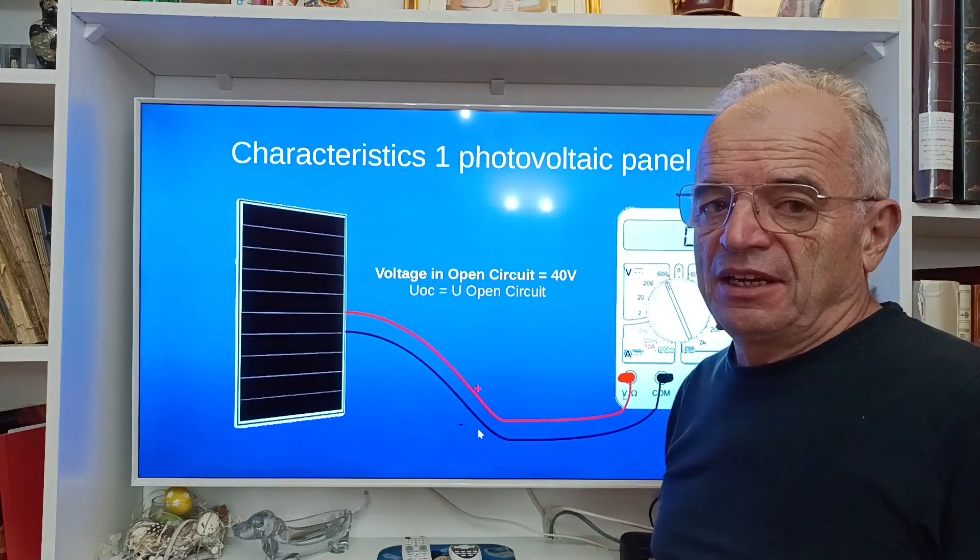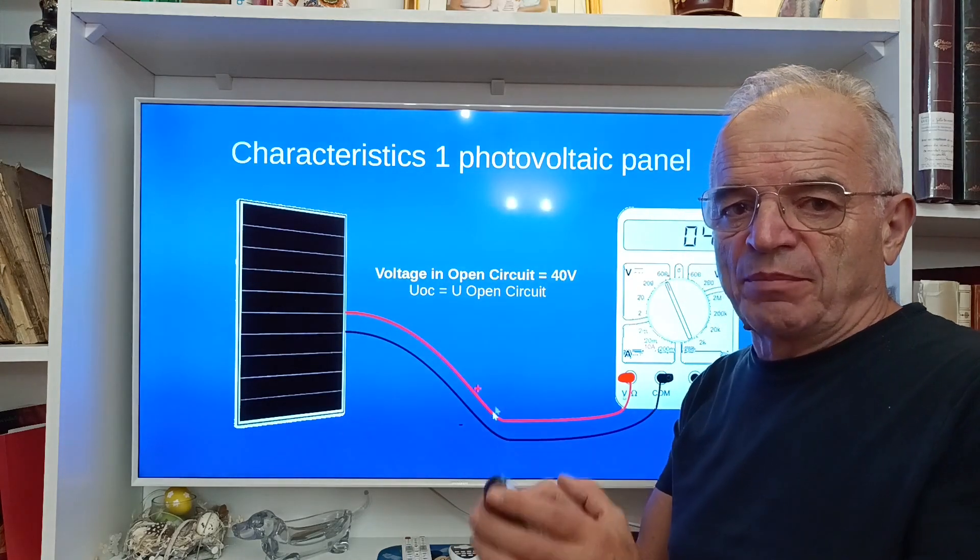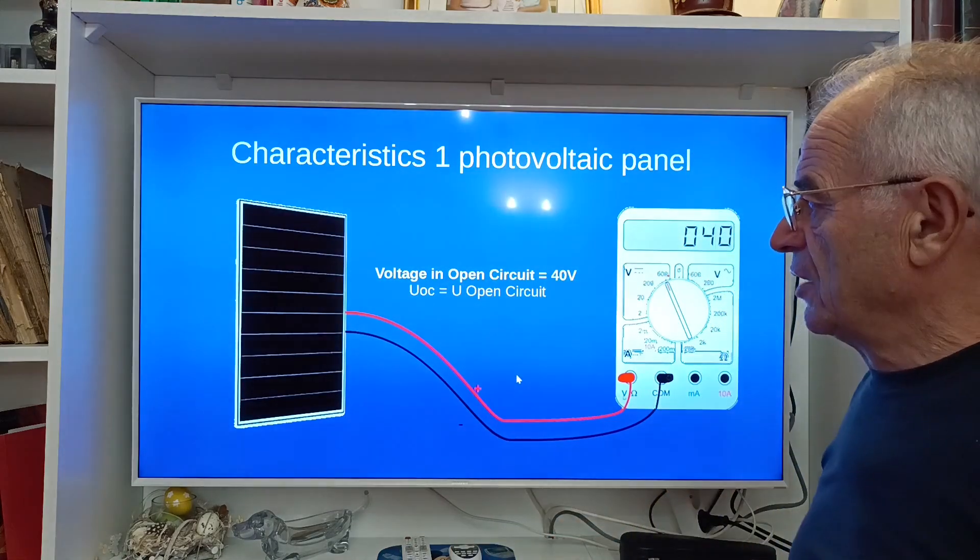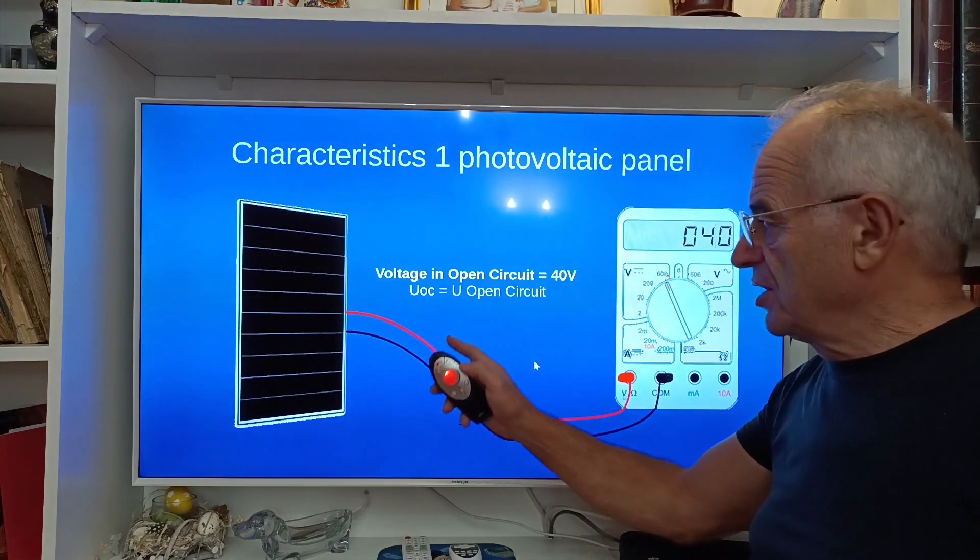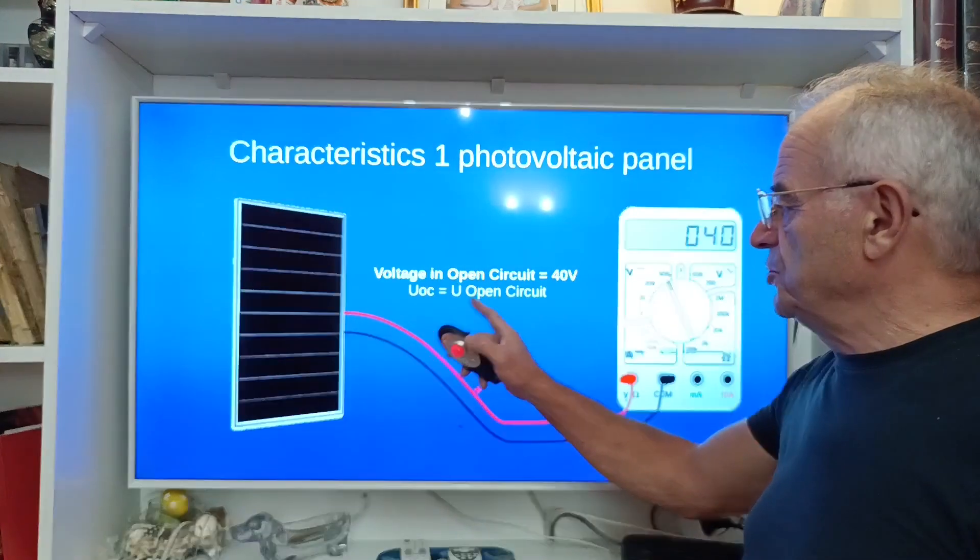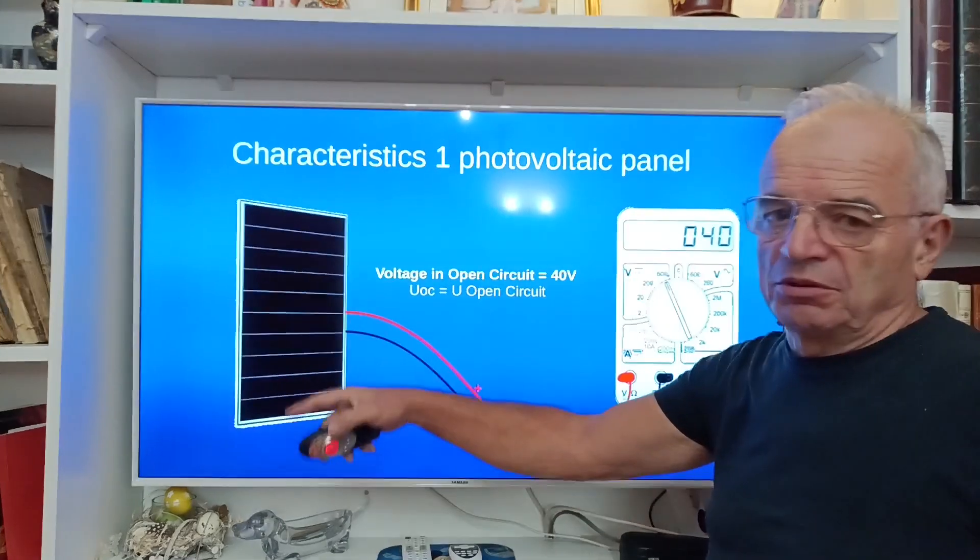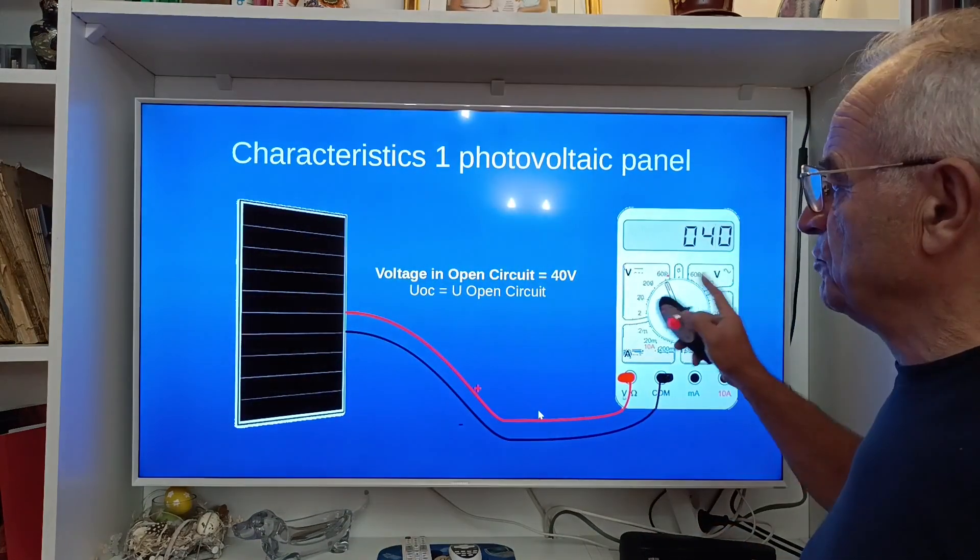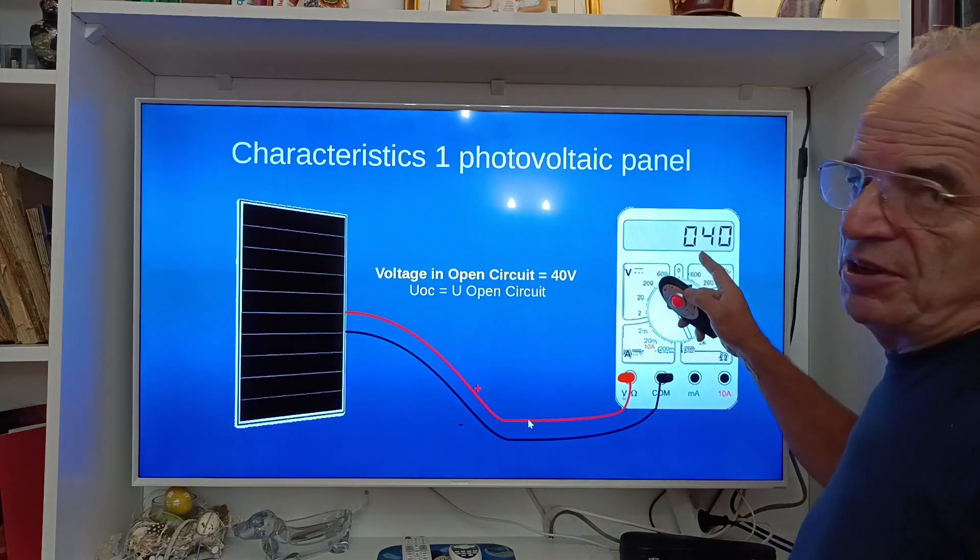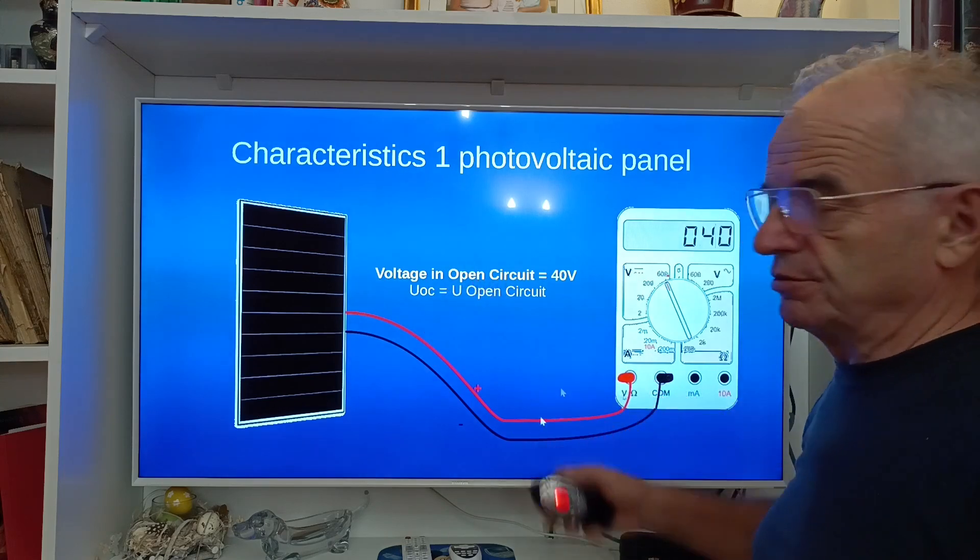The first point is to see the characteristics of just one solar panel alone. One main characteristic is what we call the open circuit voltage, also called U open circuit. For example you put a panel like this one, a big one around 400 watts, and you connect a voltmeter and here you have 40 volts of voltage in open circuit.